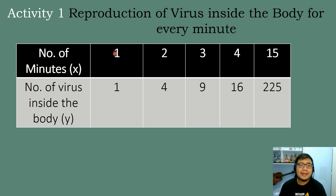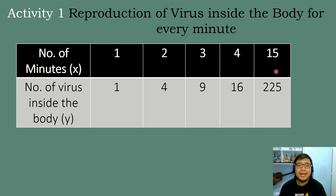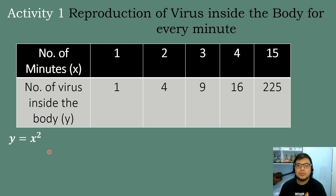Now, for x to become y, we need to multiply x by itself. So 1×1=1, 2×2=4, 3×3=9, 4×4=16, and 5×5=25. If we are multiplying a number by itself, then we can also say that for x to become y, we are squaring the value of x. So our equation will be y is equal to x squared.